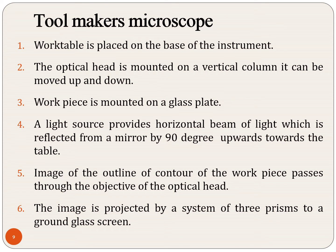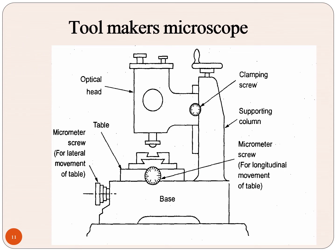The work piece is placed on the base of the instrument; the optical head is mounted on a vertical column and can be moved up and down, like a microscope. The work piece is mounted on a glass plate. A light source provides a beam of light which is reflected from a mirror by 90 degrees upwards towards the table. Look at this picture — this optical head, the table, the micrometer screw for longitudinal movement, the micrometer screw for lateral movement, the supporting column, and the clamping screw. It looks very similar to a microscope — it is called the tool makers microscope.